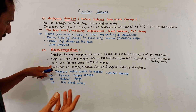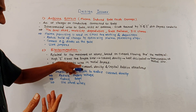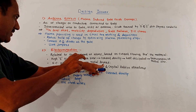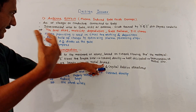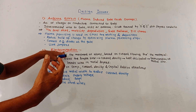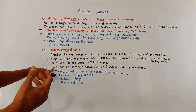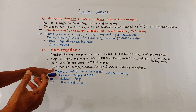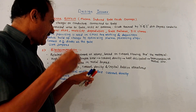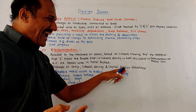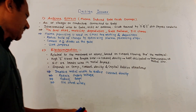Electromigration may cause short circuits or breaks in the wire in the metal layer. This effect depends on the temperature, current, current density, and also on the crystal lattice structure.